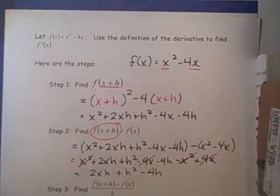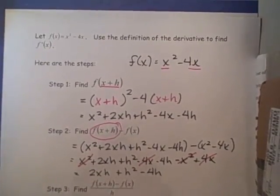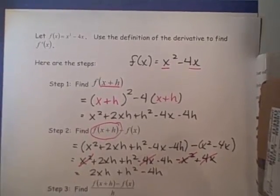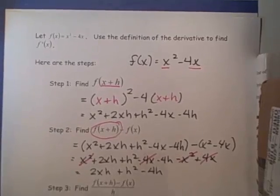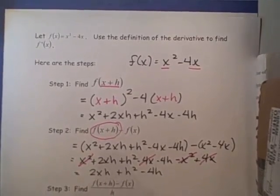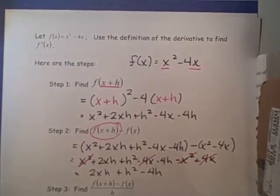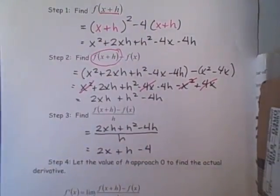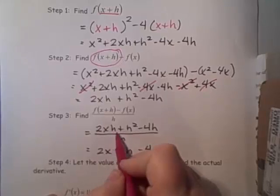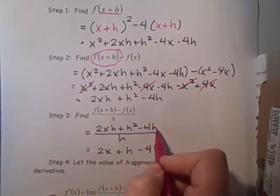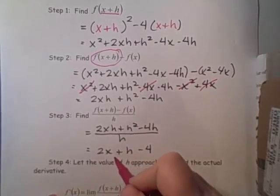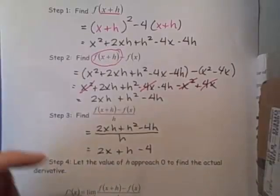Step three: take the answer from step two — 2xh plus h squared minus 4h — and divide each term by h. Dividing each term by h gives us 2x plus h minus 4. We took 2xh plus h squared minus 4h and divided by h to get 2x plus h minus 4.